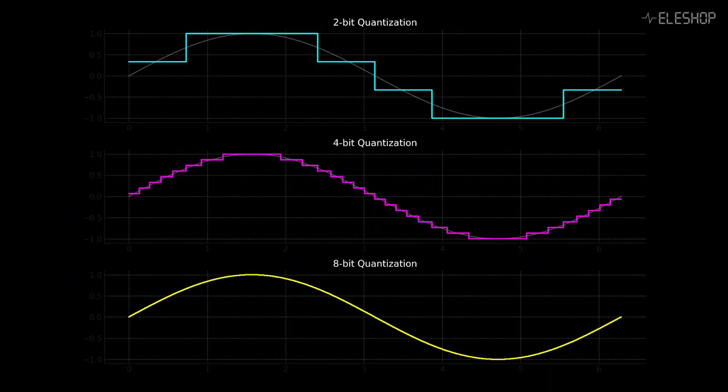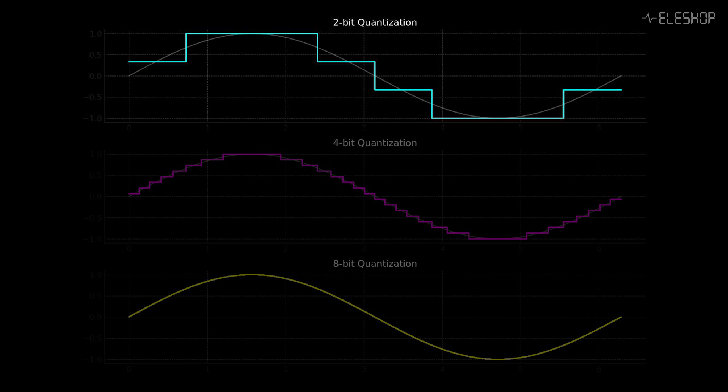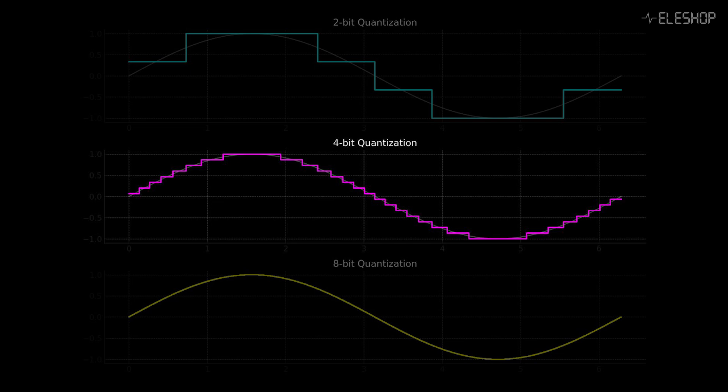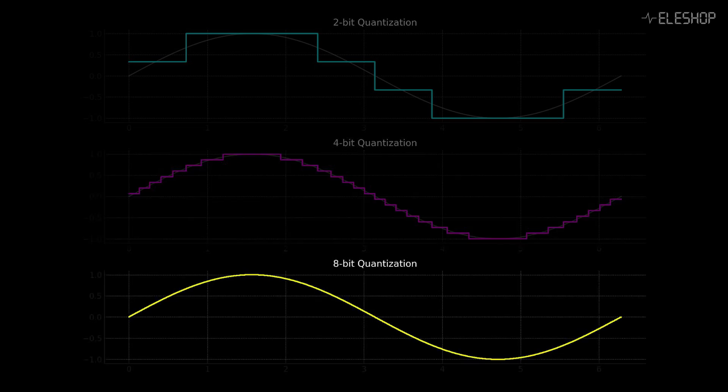An increase in the number of discrete levels results in more bits. This image shows 2-bit quantization with 4 discrete levels, 4-bit with 16 levels, and 8-bit with 256 levels.